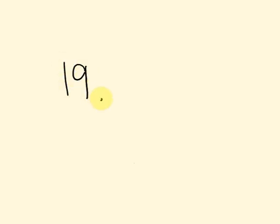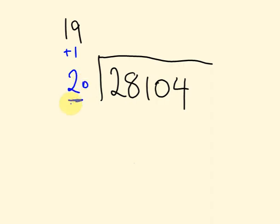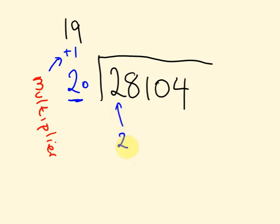Let's look at 19 again — how many times does 19 go into a bigger number: 28,104? I'll move the 19 up here. If I add 1 to it, my multiplier is 1, and I end up getting 20. I'm dividing by 2, and this is my multiplier. This one's a little bit harder than the previous one. We start with the first digit: 2 divided by 2 equals 1. Nice easy start.